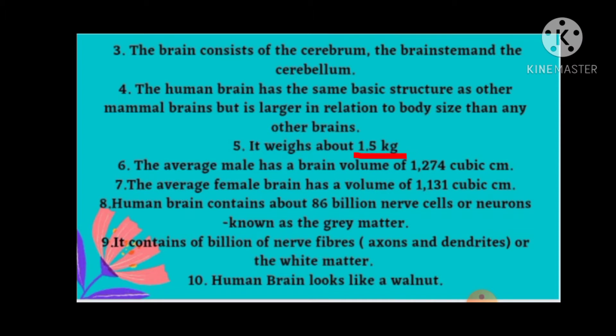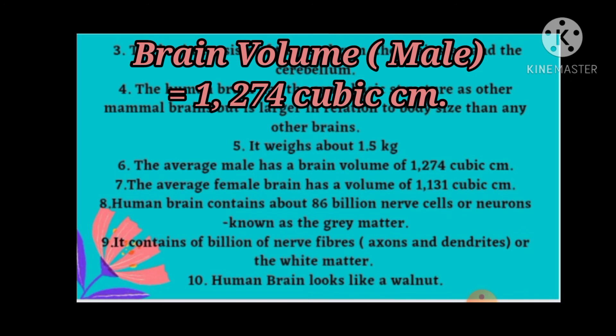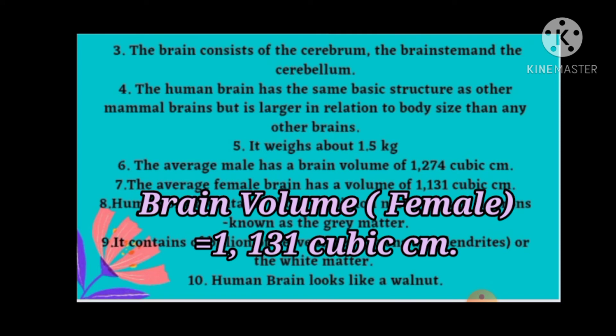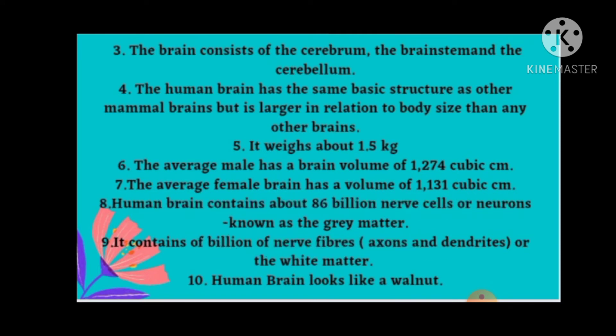It weighs about 1.5 kg in humans. The average male has a brain volume of 1,274 cubic centimetres, and the average female brain has a volume of 1,131 cubic centimetres. The human brain contains about 86 billion nerve cells, or neurons, known as the grey matter. It also contains billions of nerve fibres — axons and dendrites — known as the white matter.